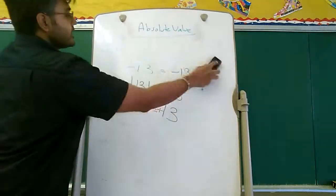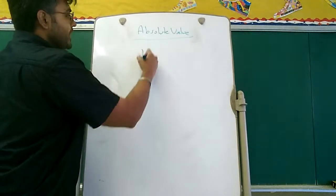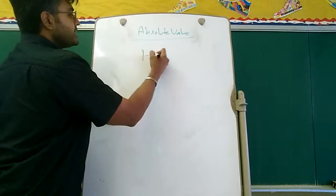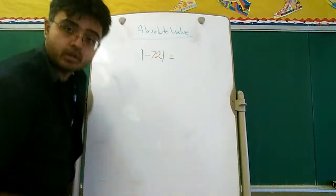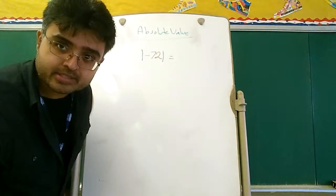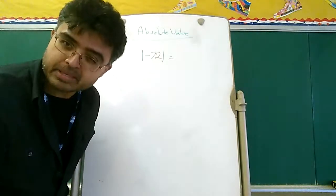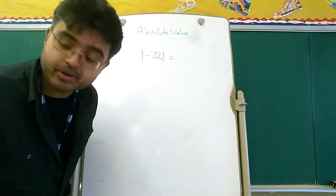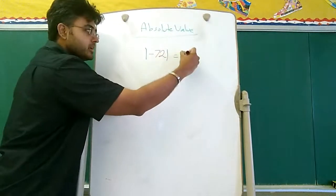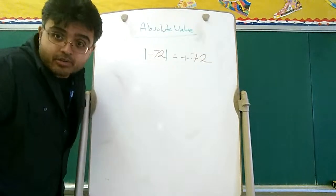Let's try another example. What is the Absolute Value of minus 72? The whole reason Absolute Value exists is to change this mean, old, negative number into a happy, smiling, positive number. Therefore, the Absolute Value of minus 72 is positive 72. And that's how it works.